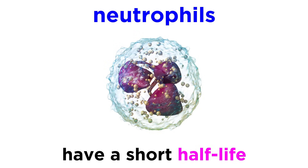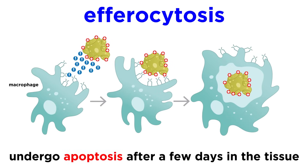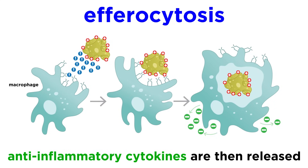One feature that helps promote resolution of inflammation is the short half-life of neutrophils, which are one of the first and most abundant cell types to appear on the scene during an infection. Neutrophils begin to undergo apoptosis after just a few days of being in the tissue, and they are phagocytosed by infiltrating macrophages in a process called efferocytosis. The process of efferocytosis can help reprogram macrophages to be less pro-inflammatory and to be more pro-resolving, meaning that they'll make fewer inflammatory cytokines, becoming more involved in clearing out dead cells and producing the kind of cytokines that promote wound healing.